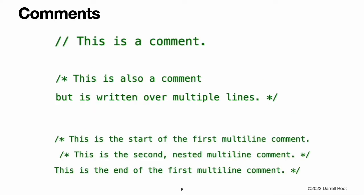Comments. Use comments to include non-executable text in your code as a note or reminder to yourself. Comments are ignored by the Swift compiler when your code is compiled. Comments in Swift are very similar to comments in C. Single-line comments begin with two forward slashes. Multi-line comments start with a forward slash followed by an asterisk and end with an asterisk followed by a forward slash. Unlike multi-line comments in C, multi-line comments in Swift can be nested inside other multi-line comments. Nested multi-line comments enable you to comment out large blocks of code quickly and easily, even if the code already contains multi-line comments.